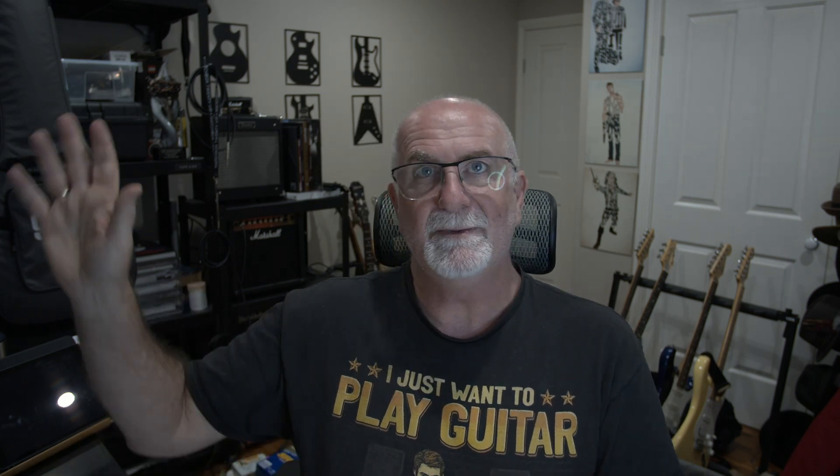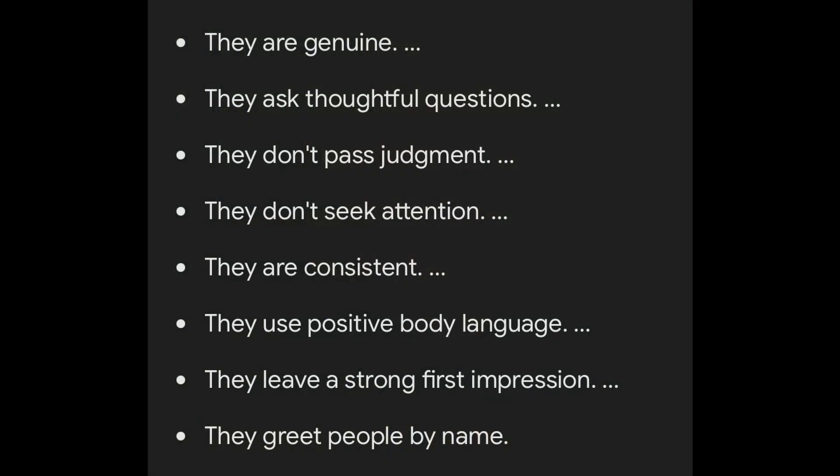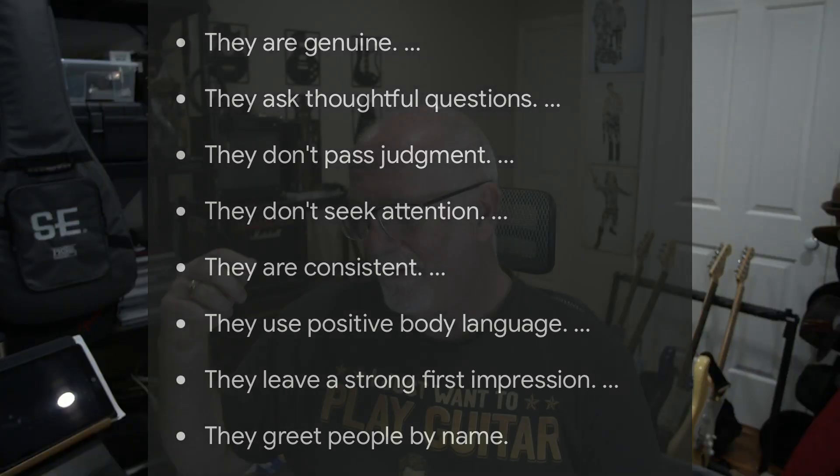The other things that can make someone likable — make them genuine, make them tell the truth. Here are some more: likeable people are genuine, they ask thoughtful questions, they don't pass judgment, they don't seek attention, they are consistent, they use positive body language, they leave a strong first impression, they greet people by name. So there's a quick checklist of things you can get your character to do to make them likable to other characters.